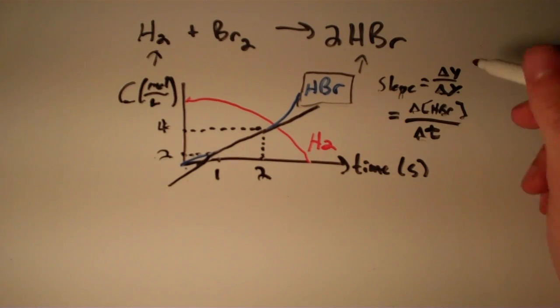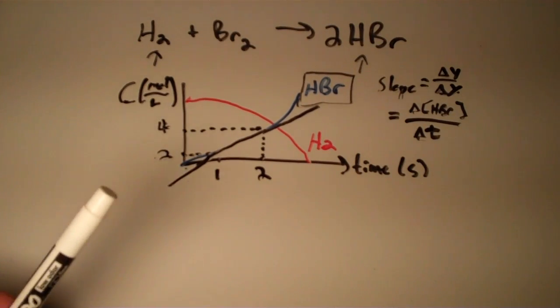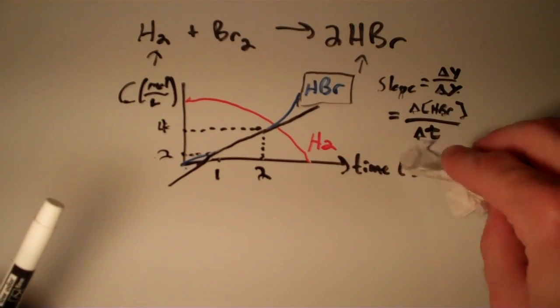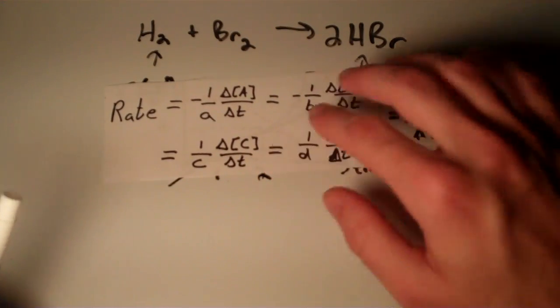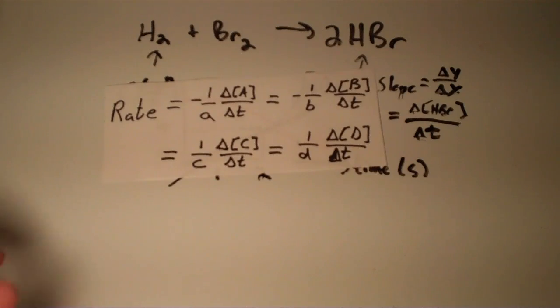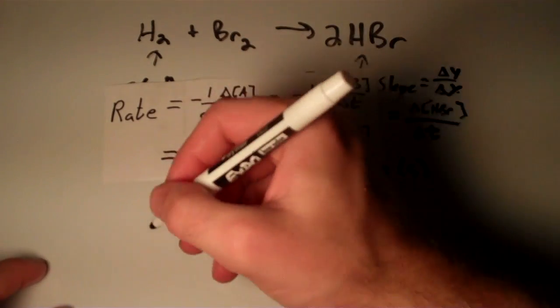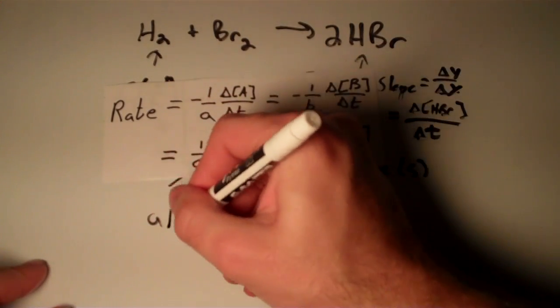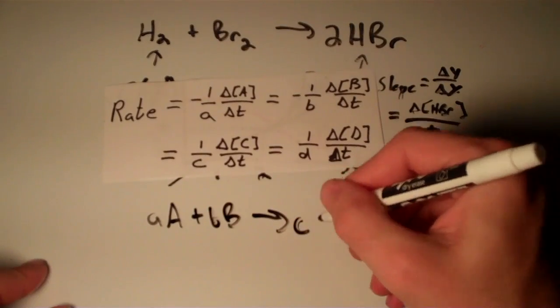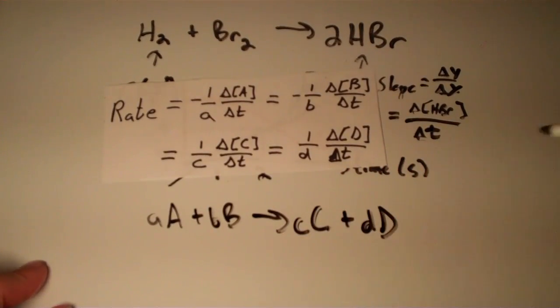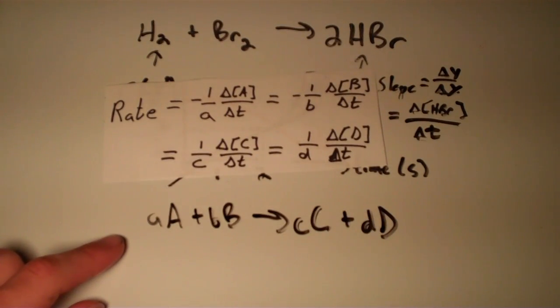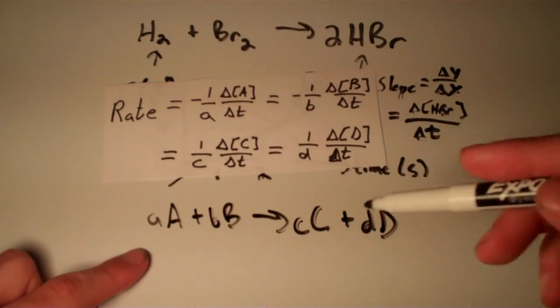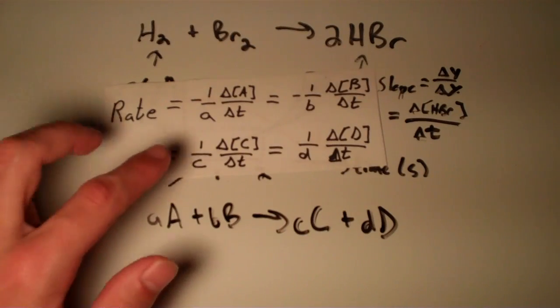But when it comes to reaction rates, we actually have to account for the stoichiometry of the overall reaction. There's really only one equation that you have to know when you consider this. This equation corresponds to the following reaction scheme: you have a moles of A plus b moles of B yielding c moles of C plus d moles of D. A, B, C, and D—the capital letters—are the reactants and products themselves, and the little a, little b, little c, and little d, those are the stoichiometric coefficients.